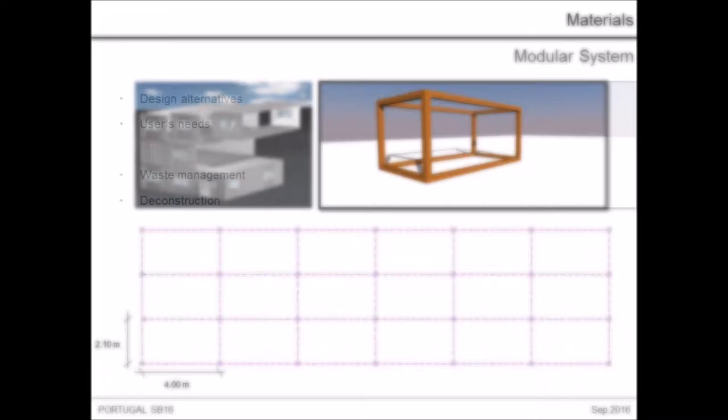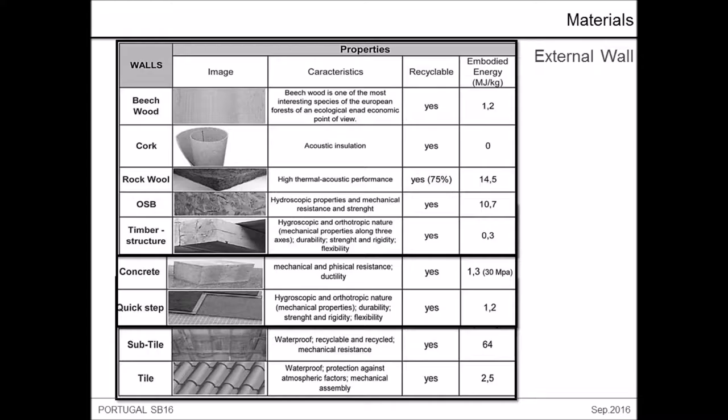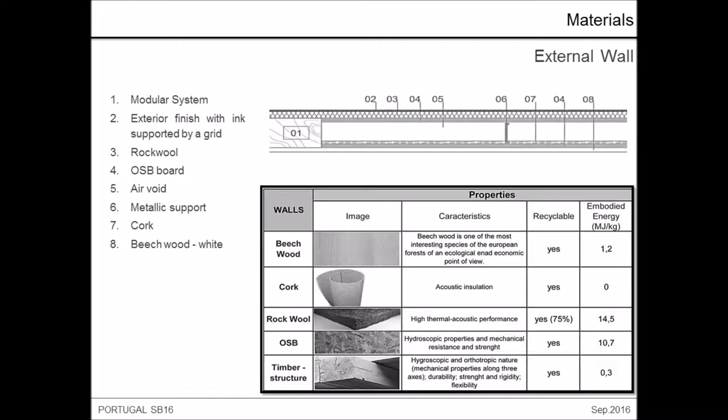Modular housing construction allows a variety of alternatives and design possibilities, offering a wide range of options to customize the house. Here there is a description of the materials chosen for the eco-house. As we can notice, all of them are recycled.